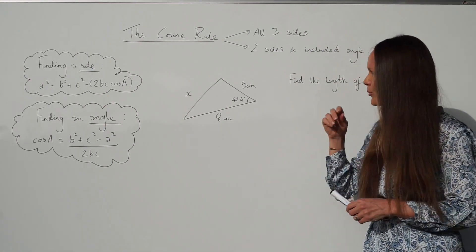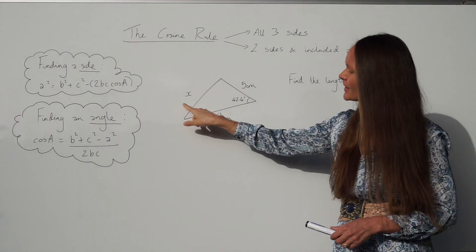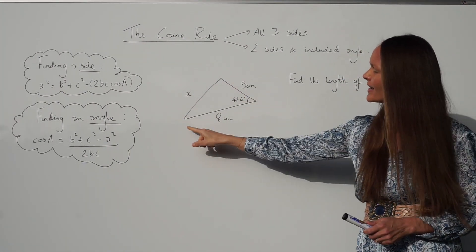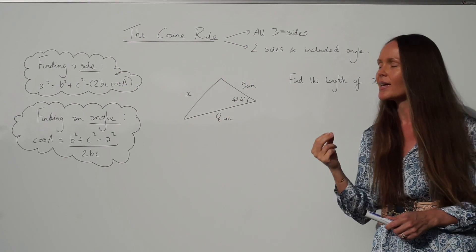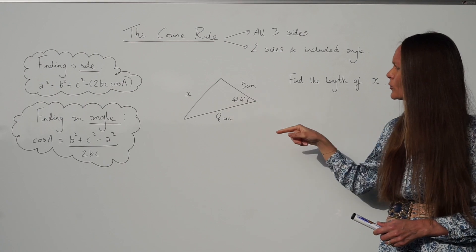All right, so here's the first example. So we have to find the length of x, so the length of this side here, and we've been given the two sides here, five centimeters and eight centimeters, and we have the included angle. Okay, so the angle in between them, 42.4 degrees.